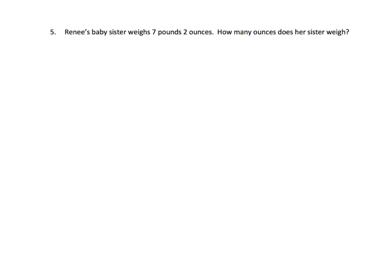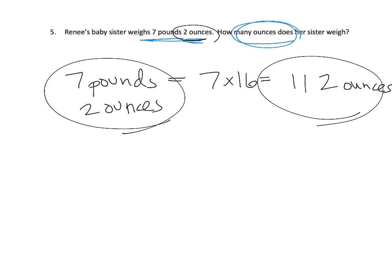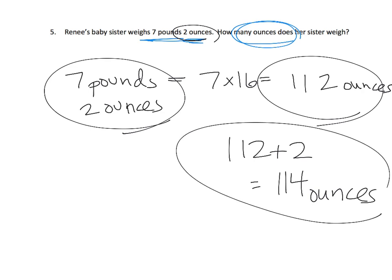So here it says Renee's baby sister weighs seven pounds, two ounces. How many ounces does her sister weigh? So we've just in the previous slide learned that to turn seven pounds into ounces, you're going to do seven times sixteen, which equals one hundred twelve ounces. And then we have an additional two ounces. So seven pounds two ounces is going to be one hundred twelve plus an extra two, which gives us one hundred fourteen ounces. And so that is our answer right there. And we know that because of our previous slide where we had that conversion factor. Each pound is sixteen ounces. So seven times sixteen plus an extra two.